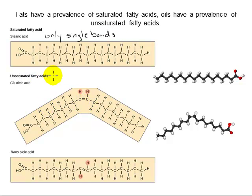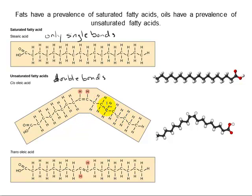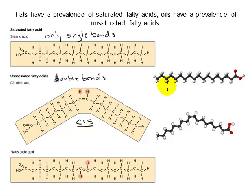Unsaturated fatty acids contain one or more double bonds along the chain, and as a result, each of the carbons participating in the double bond is bonded to only one hydrogen atom, otherwise they would exceed their valence. In nearly all naturally occurring fatty acids, the three-dimensional orientation of the ends of the hydrocarbon chain on either side of the double bond is the cis orientation, meaning on the same side of the double bond. Cis double bonds introduce a bend in the hydrocarbon tail, and this bend is responsible for the difference in physical properties of fats and oils.